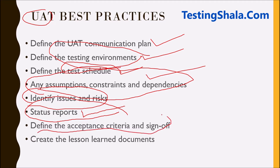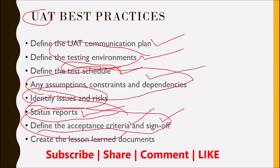There should also be a mechanism for defining the acceptance criteria and sign-off. This is the last and very important aspect that needs to be taken care of, because if you do not define this properly there is no end to testing. We should clearly define the acceptance criteria — when testing activities are completed and if they meet the criteria, then business users and end users are going to sign off saying that what the developers have implemented is working as expected and they are ready to release this product into the production environment.